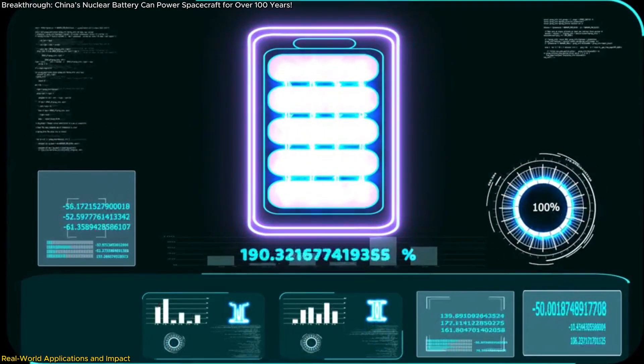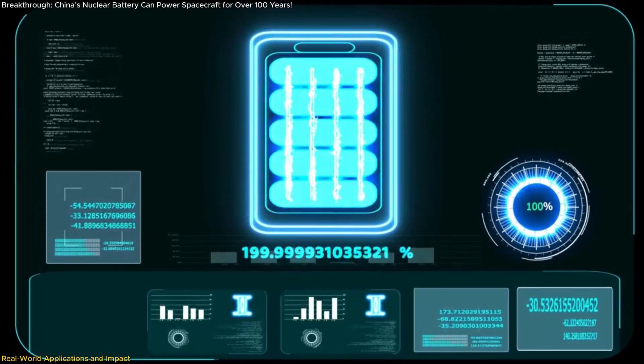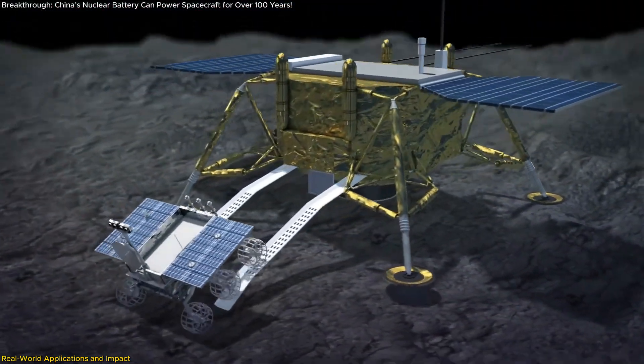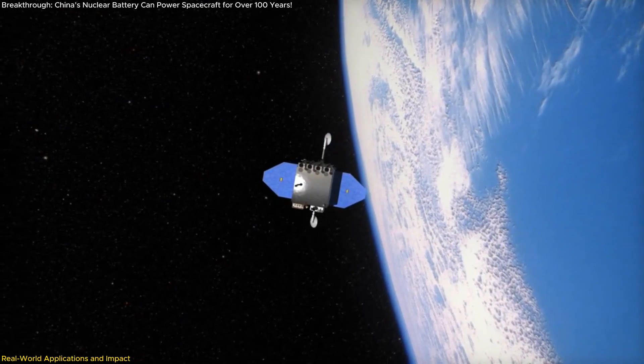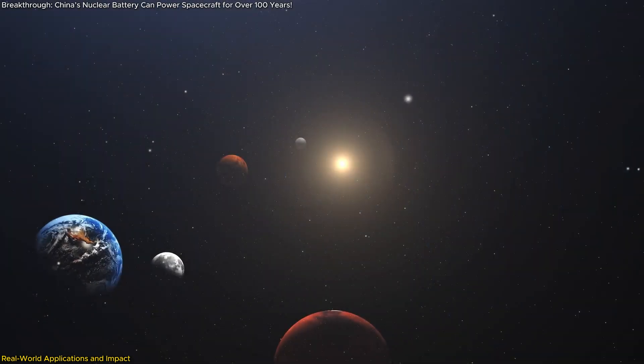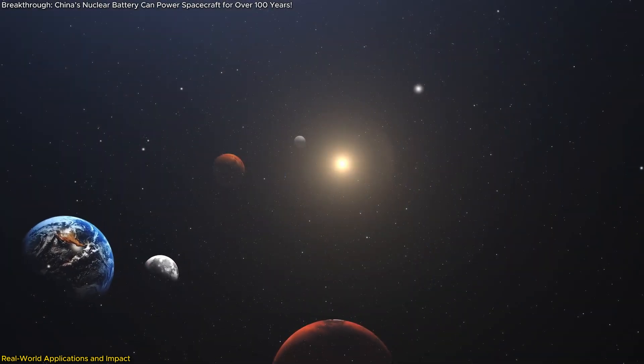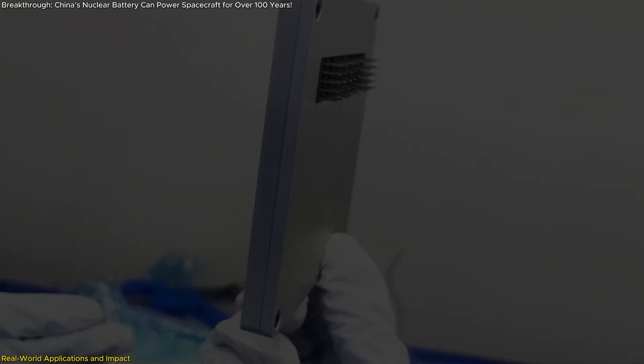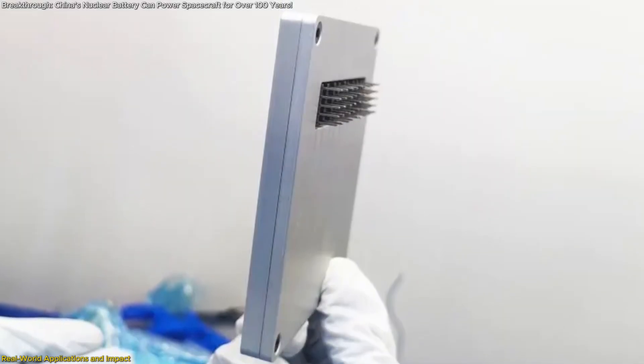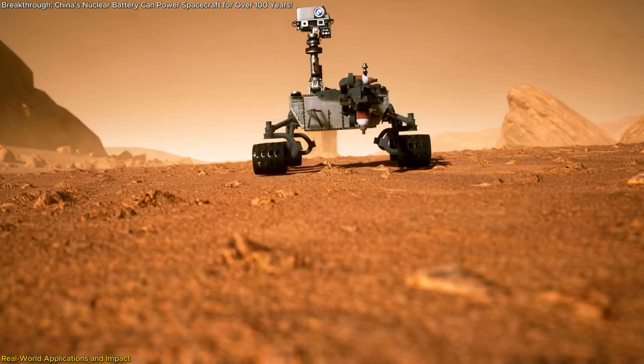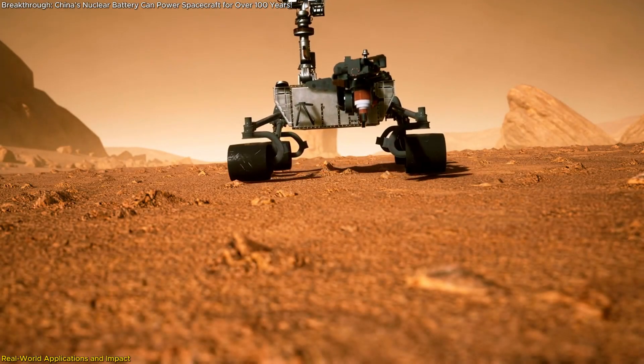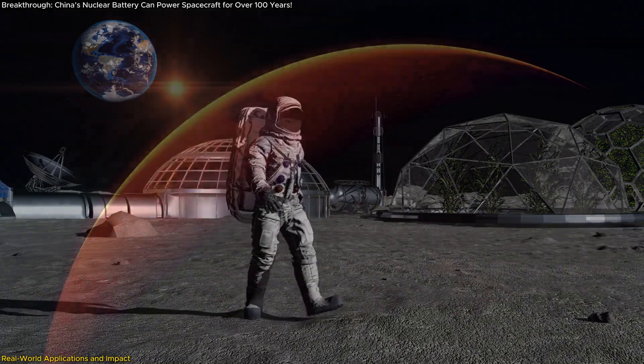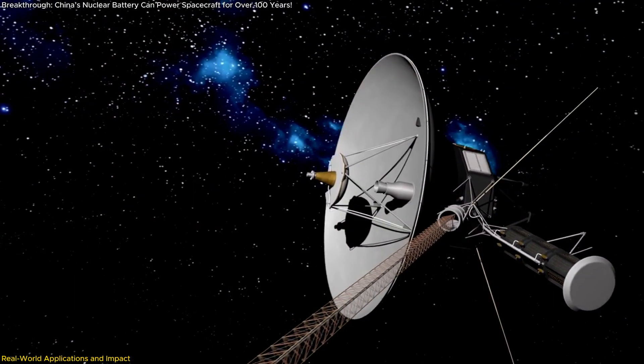Deep space probes, rovers, and satellites struggle with power limitations. Solar panels are ineffective on distant planets, and traditional batteries degrade over time. Zhulong-1 could provide uninterrupted energy for space missions, allowing probes to operate for centuries rather than years. This would be critical for lunar bases, Martian colonization, and interstellar exploration.